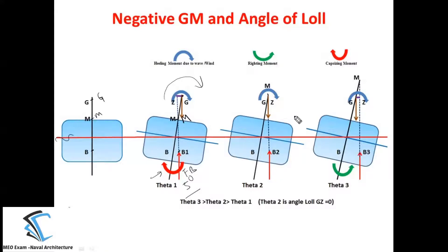When the ship heels further to, say, 15°, the overall centroid of the underwater volume shifts further towards starboard because the increment in volume to starboard is greater. The line of action of the buoyant force passes through B2 and intersects the centerline at the metacenter. At this angle, G, M, and Z all coincide at the same point — so GM is 0 and GZ is also 0, meaning no moment is generated.